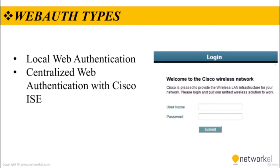There are two types of WebAuth: local web authentication and centralized web authentication with Cisco ISE. For local web authentication — the first form of web authentication created — the switch redirects web traffic to a locally hosted web portal running on the switch, where an end user can enter a username and password.